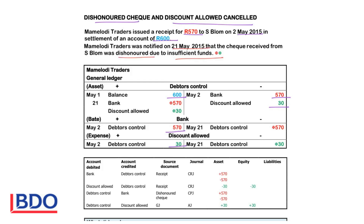Therefore the debtor must now owe the full amount of 570 plus the 30 rand discount that we credited his account when he paid. So we will debit the debtor's control with the full 600. We will show that we don't have the money in the bank anymore, so we will credit the bank to complete the double entry.